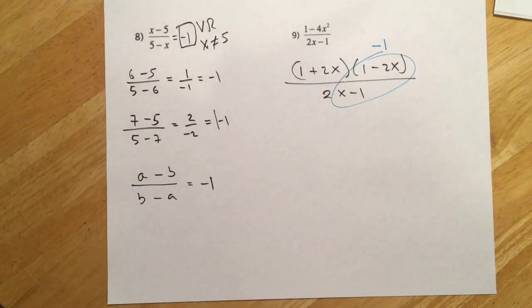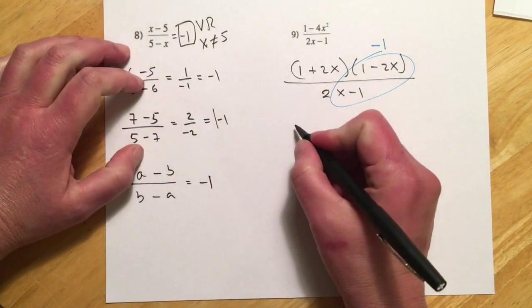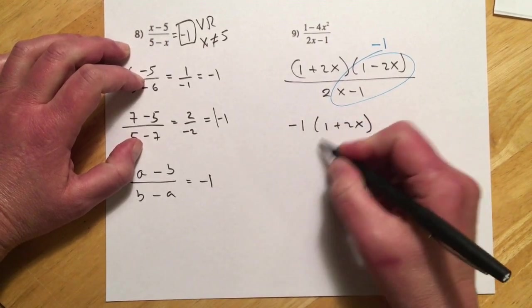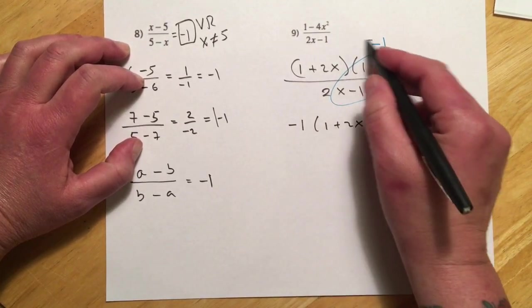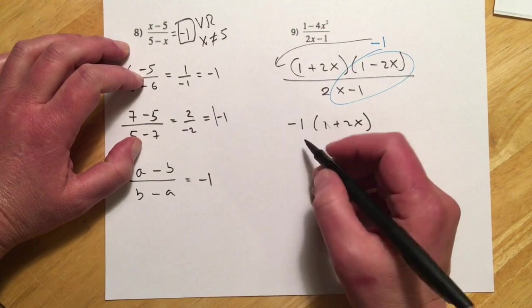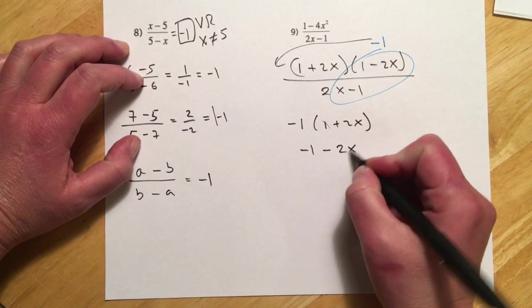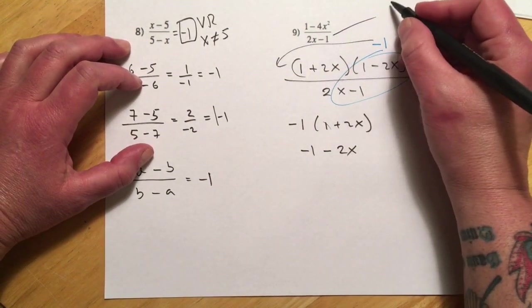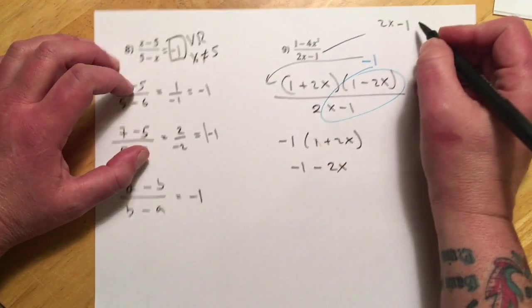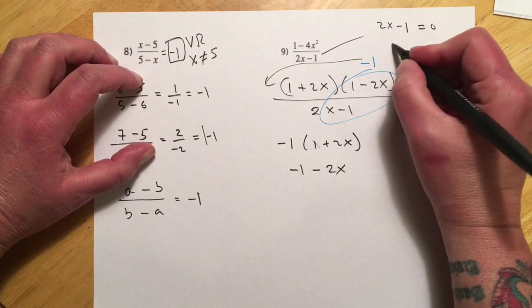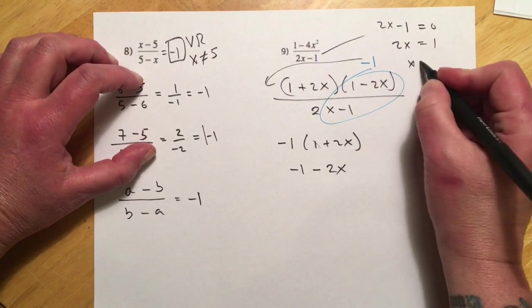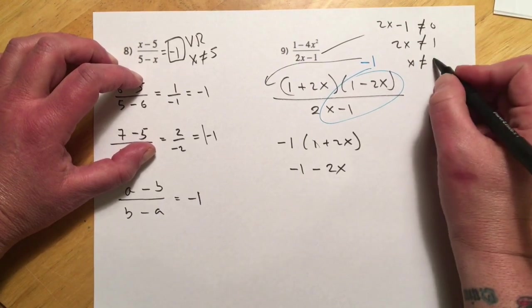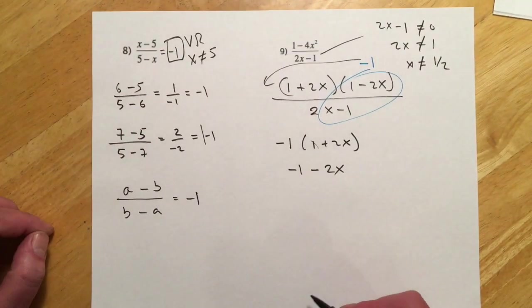And so that would look like negative 1 times 1 plus 2x. And then I can just distribute the negative. I just put it in front to make it a little bit easier to see. So that's going to go negative 1 and then minus 2x. And on this one, our restrictions would be 2x minus 1 equals 0. So 2x equals 1. x doesn't get to equal, basically, that can't equal 0. And so that would be x can't be 1 half.